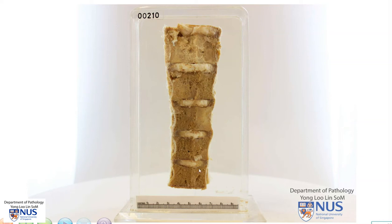In summary, this is a segment of the vertebral column that has been cut or split longitudinally and we can see several fleshy, tan areas within the vertebral bodies, which represents metastatic carcinoma. The diagnosis here is metastatic nasopharyngeal carcinoma.